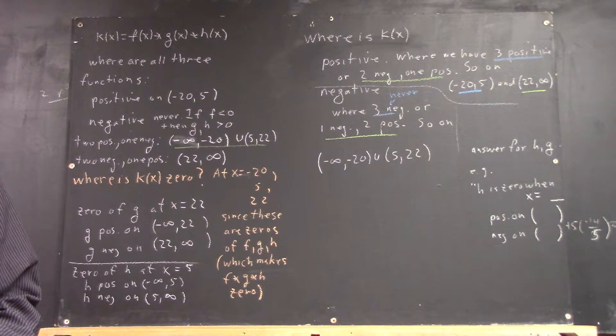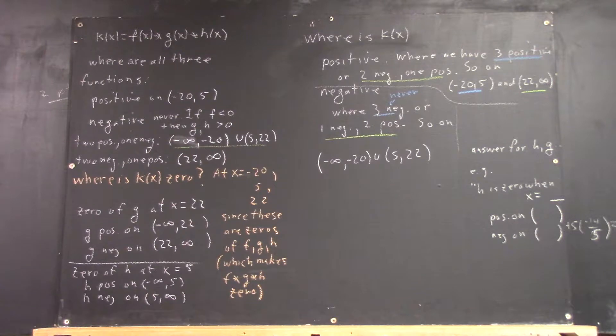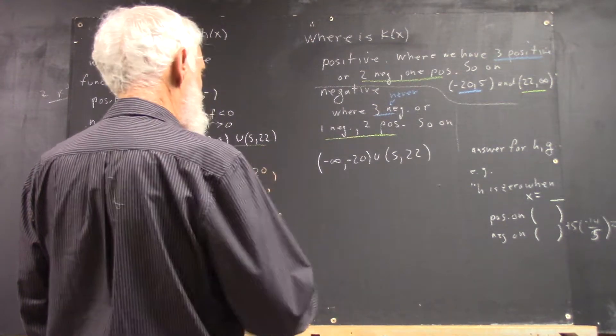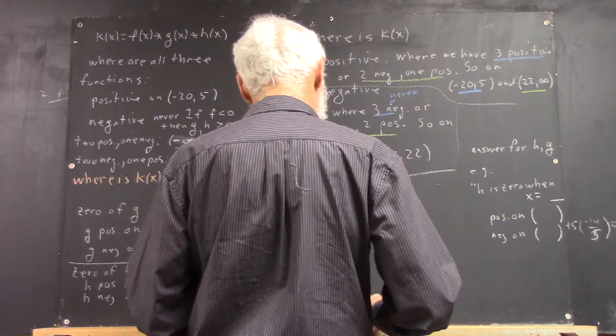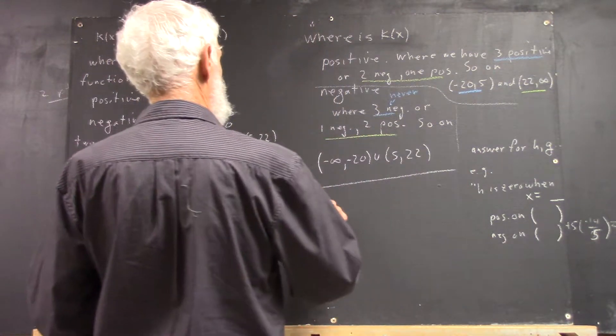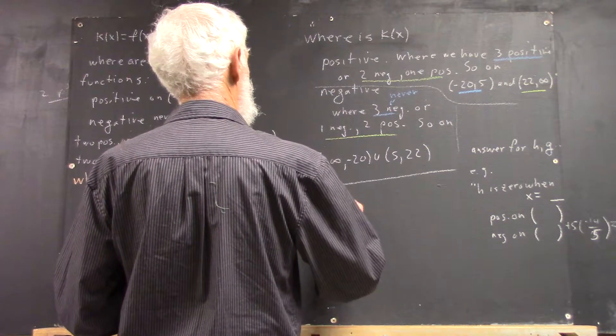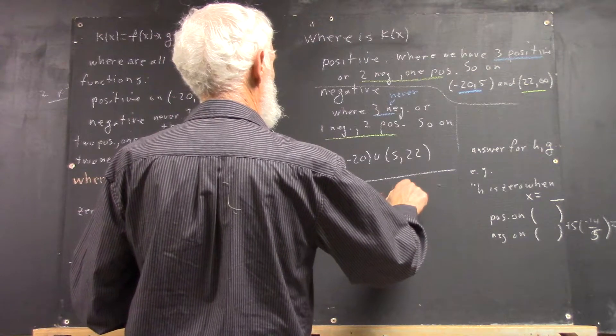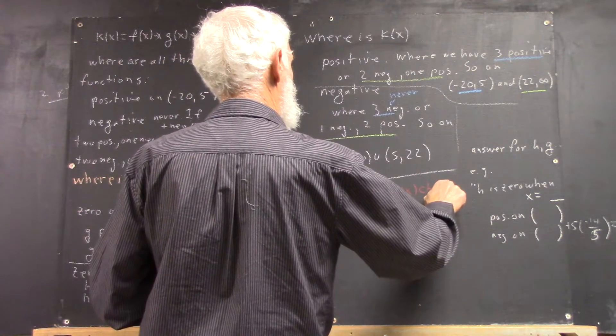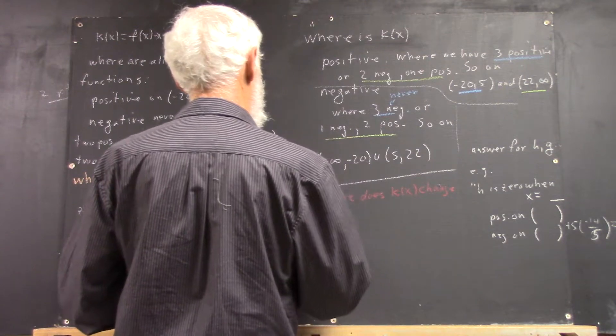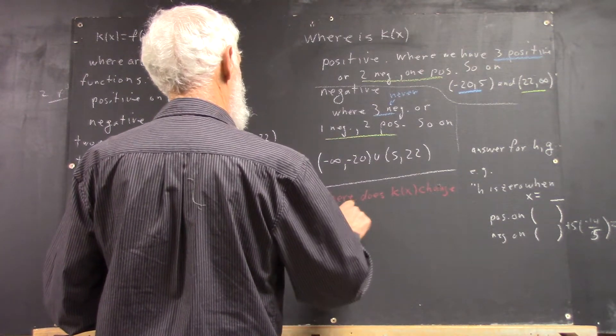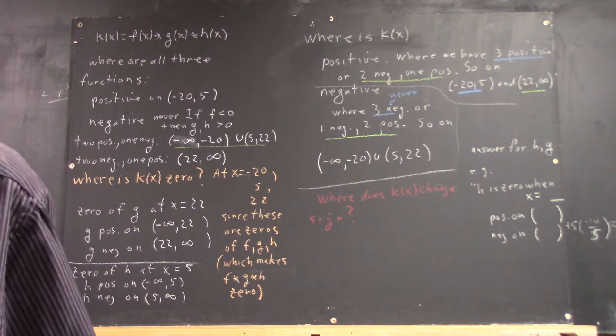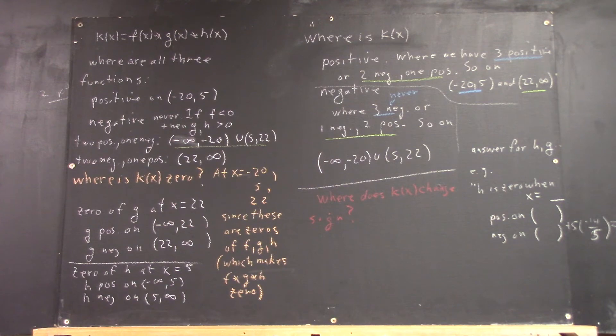Make sense? Okay. So now my question is, where does k of x change its sign? That means change from positive to negative, or negative to positive.